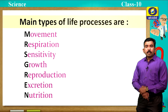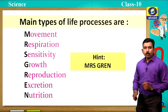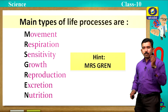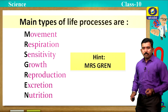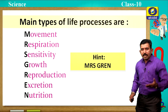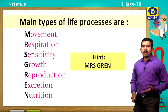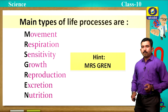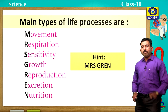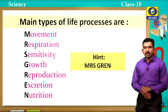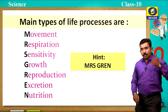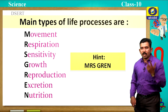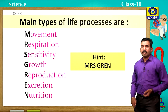I am going to give a small hint for you all — that is Mrs. Grin. Remember this word Mrs. Grin, so that you can easily write the different types of life processes. In this chapter, we are going to study mainly four types of life processes: first, nutrition; second, respiration; third, transportation; and fourth, excretion.